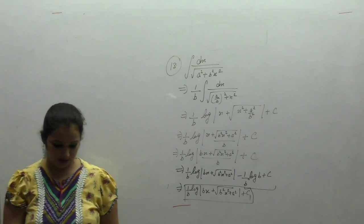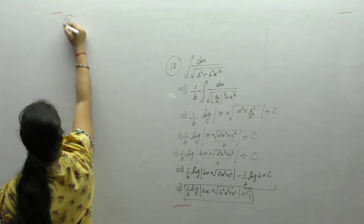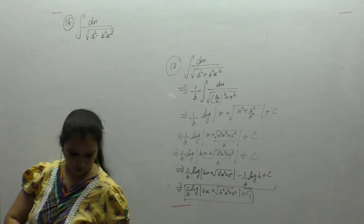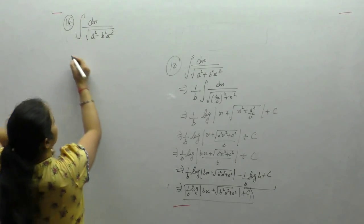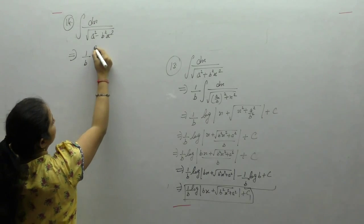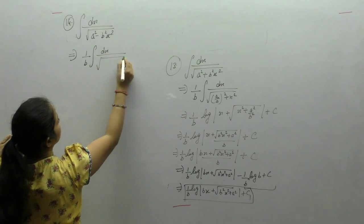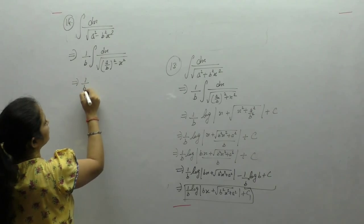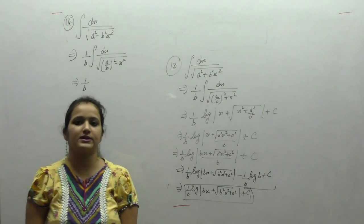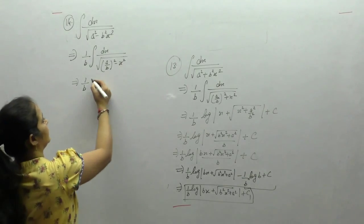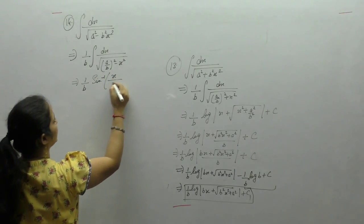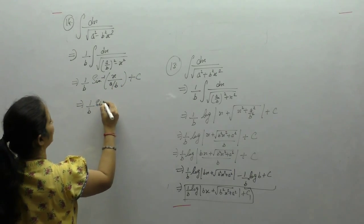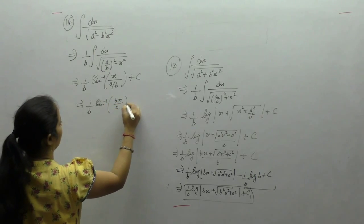Now the next question is the integral of 1 upon square root of (a square minus b square x square). In the first step, take b square common: square root of b square is b, giving dx upon square root of (a upon b whole square minus x square). The formula: 1 upon square root of (a square minus x square) equals sine inverse (x upon a) plus c. So the result is 1 upon b times sine inverse (bx upon a) plus c.